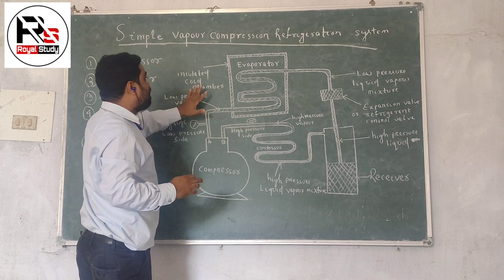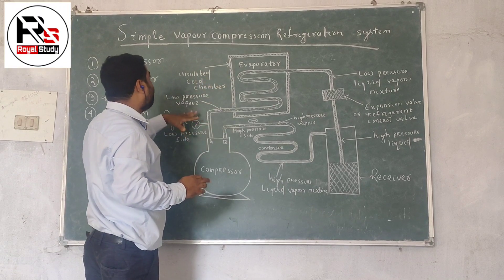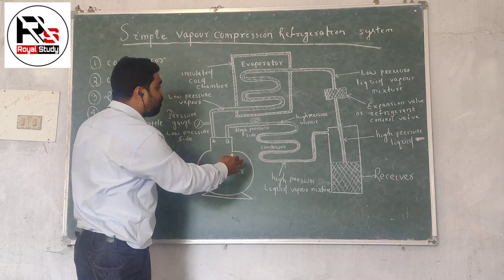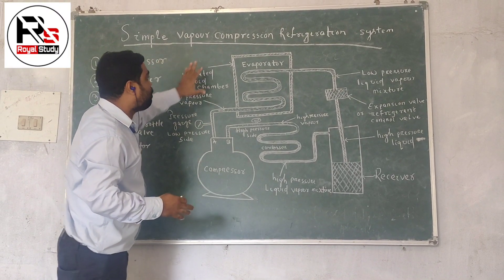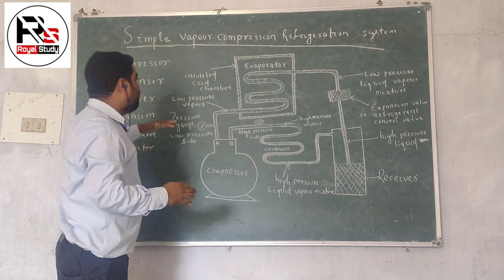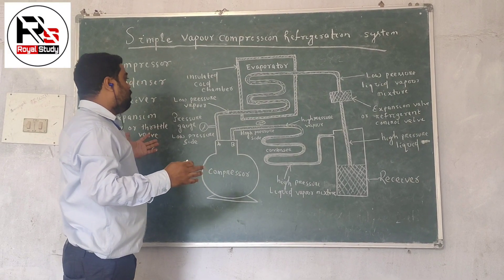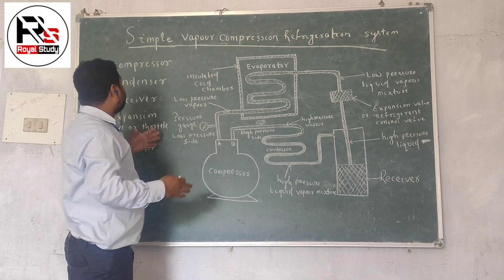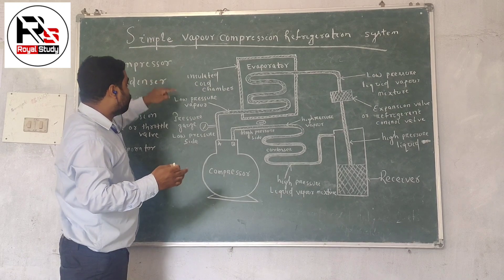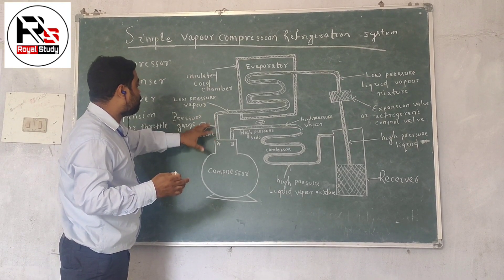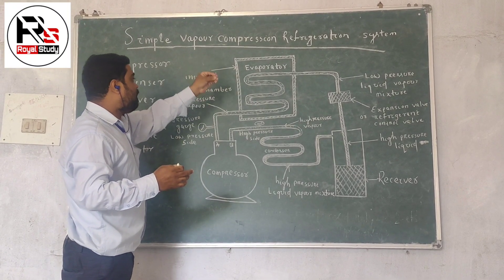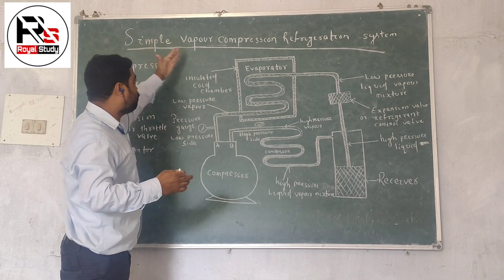This is a schematic diagram. I have explained all the parts of the simple vapor compression refrigeration system and described the different components. This simple vapor compression system is used for both industrial and small domestic purposes, and it is also widely used in big industries. It is known as the simple vapor compression system because the low pressure temperature vapor refrigerant is changed into high pressure temperature vapor refrigerant in the compressor.